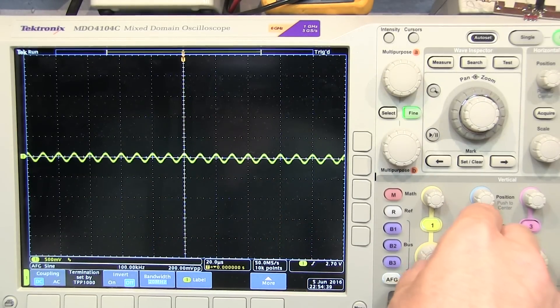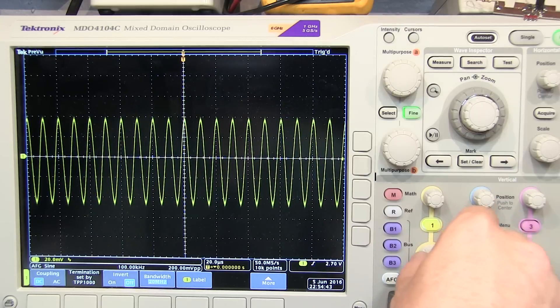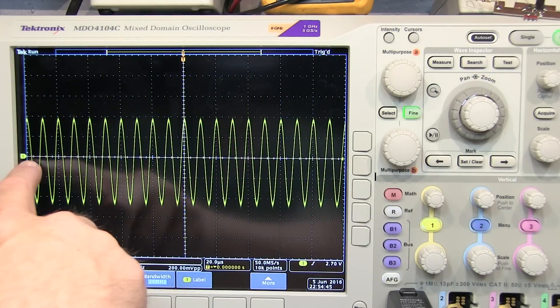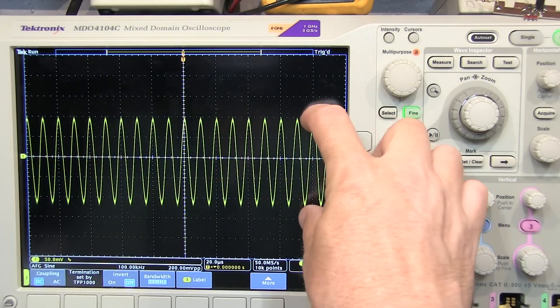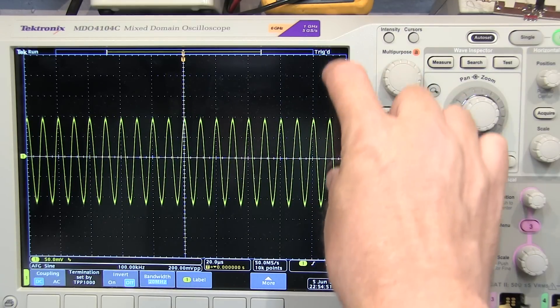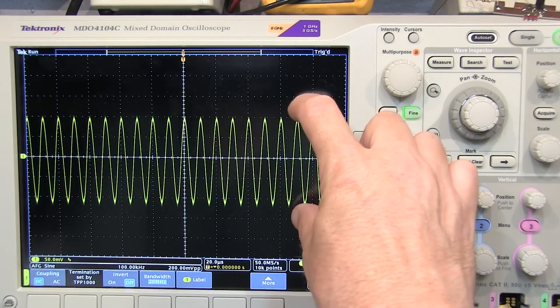So now if I adjust my vertical scale, I'm just centering around that reference point. So I can adjust that all I want now, and I've got all the sensitivity I want, and I know not only where the DC level is of this waveform, because there's 2.7 volts, I also know the AC content.